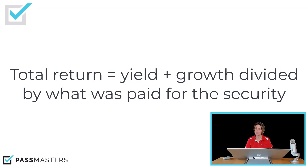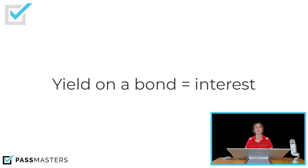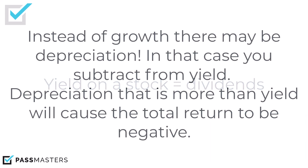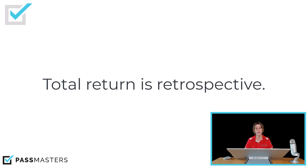So, Total Return — let's look at the definition. It is yield plus growth divided by what was paid for the security. Yield on a bond would be the interest. Yield on a stock would be the dividends paid. It's important to note that sometimes there is not growth — no appreciation. Instead, there is depreciation, which is an amount of money you would subtract from the security's yield. When depreciation is more than yield, it will cause the total return to be negative. Total return is retrospective, so we're looking at what has happened in the past.